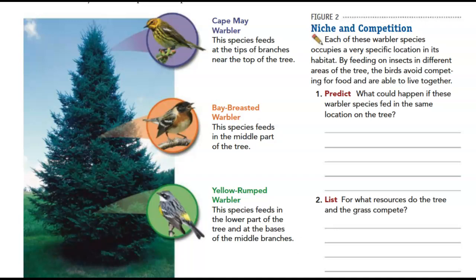Here's figure two — niche and competition. Each warbler species occupies a very specific location in its habitat. By feeding on insects in different areas of the tree, the birds avoid competing for food and are able to live together. The Cape May warbler feeds at the tip of branches near the top of the tree, the bay-breasted warbler feeds in the middle part of the tree, and the yellow-rumped warbler feeds in the lower part of the tree and at the base of the middle branches. They're all sharing the same tree but are each cut off to a different section.